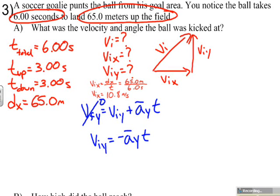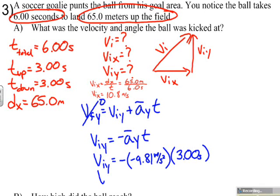Rearranging that whole thing to solve for viy, we get viy equals negative ayt, and we plug in our acceleration in the y direction is negative 9.81 meters per second squared, and our time of 3 seconds because that's the amount of time that it was rising.